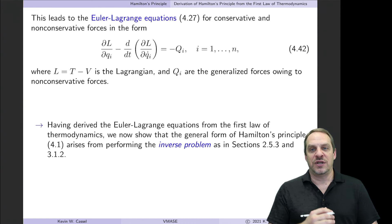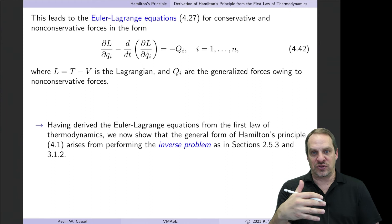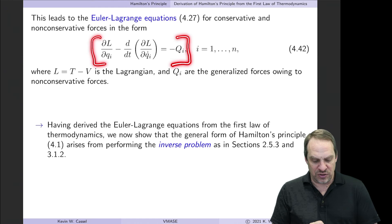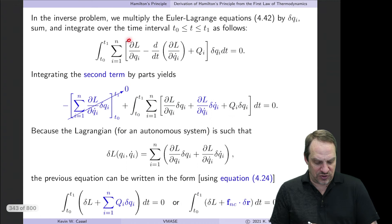To get the variational form, we need to solve the inverse problem. Starting from the differential Euler-Lagrange equations for both conservative and non-conservative forces, we multiply by the variation of the dependent variables, integrate over the independent variable time, and perform integration by parts to arrive at Hamilton's variational form.